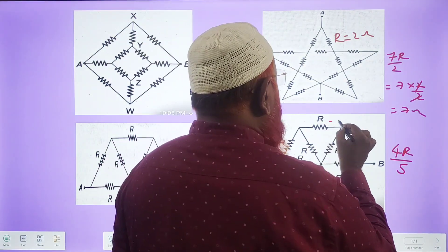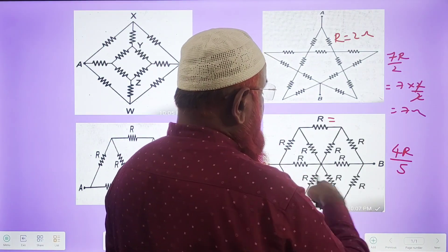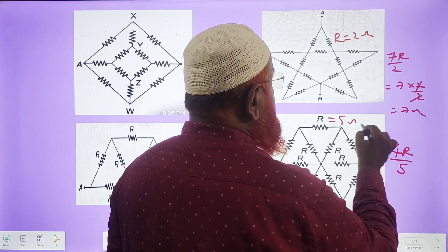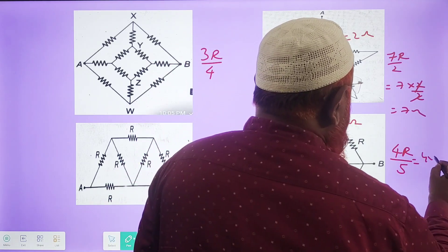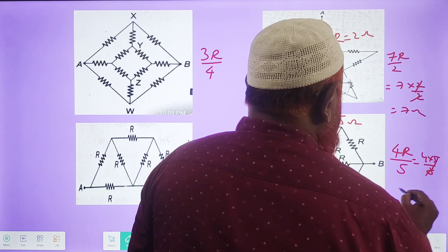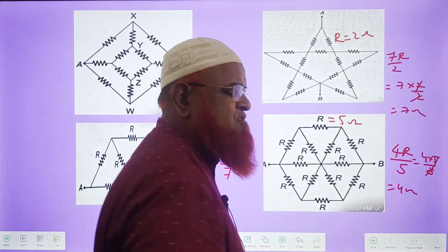For example, if the resistance in each and every resistor in this circuit is 5 ohms, then your answer is 4 into 5 by 5. The answer is going to be 4 ohms. That's it. So simple it is.